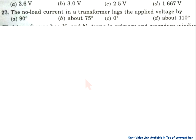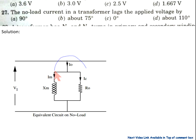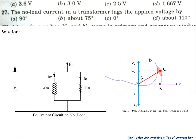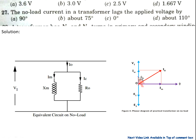Question number 27: The no-load current in a transformer lags behind the applied voltage by — A) 90°, B) about 75°, C) 0°, D) about 110°. Solution: this is the equivalent circuit of the transformer where R0 is the core loss resistance and Xm is the magnetizing reactance, with I0 the no-load current. In the phasor diagram at no load, due to very high impedance, the exciting current core-loss component is very small and the magnetizing component Im is dominant. So the angle between V and I0 is...